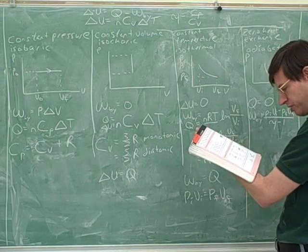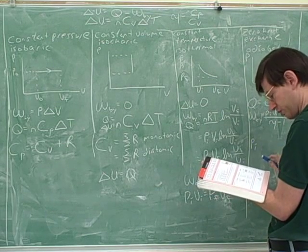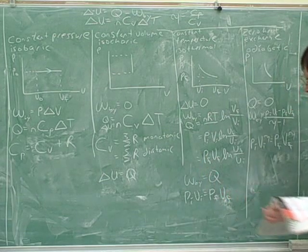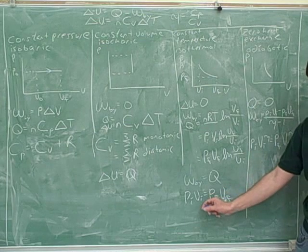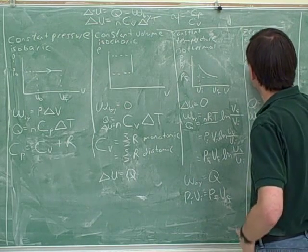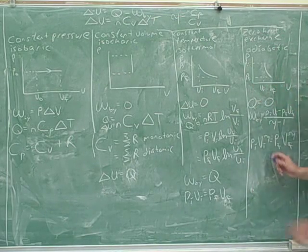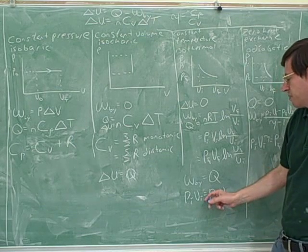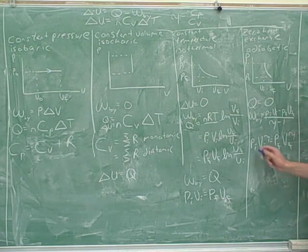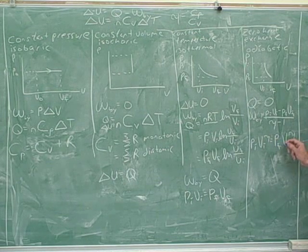A couple other things that are possible to prove. We could prove that P initial V initial to the gamma equals P final V final to the gamma. Compare that to this little equation down here. So you don't want to get these two confused. We knew this was easy to prove because it comes from PV equals nRT, holding T constant. This is a lot harder to prove, so we'll just memorize this. Okay. This also has a gamma term in it again.